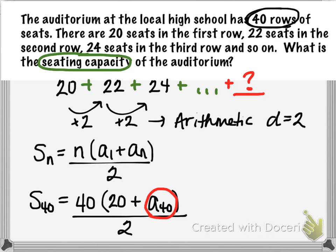Back to our previous computation, now we can input 98 here in place of a sub 40. Now we know the 40th term of this particular sequence. So computing this sum, 40 times 20 plus 98, all divided by 2, gives us 2,360. There are 2,360 seats in this auditorium.